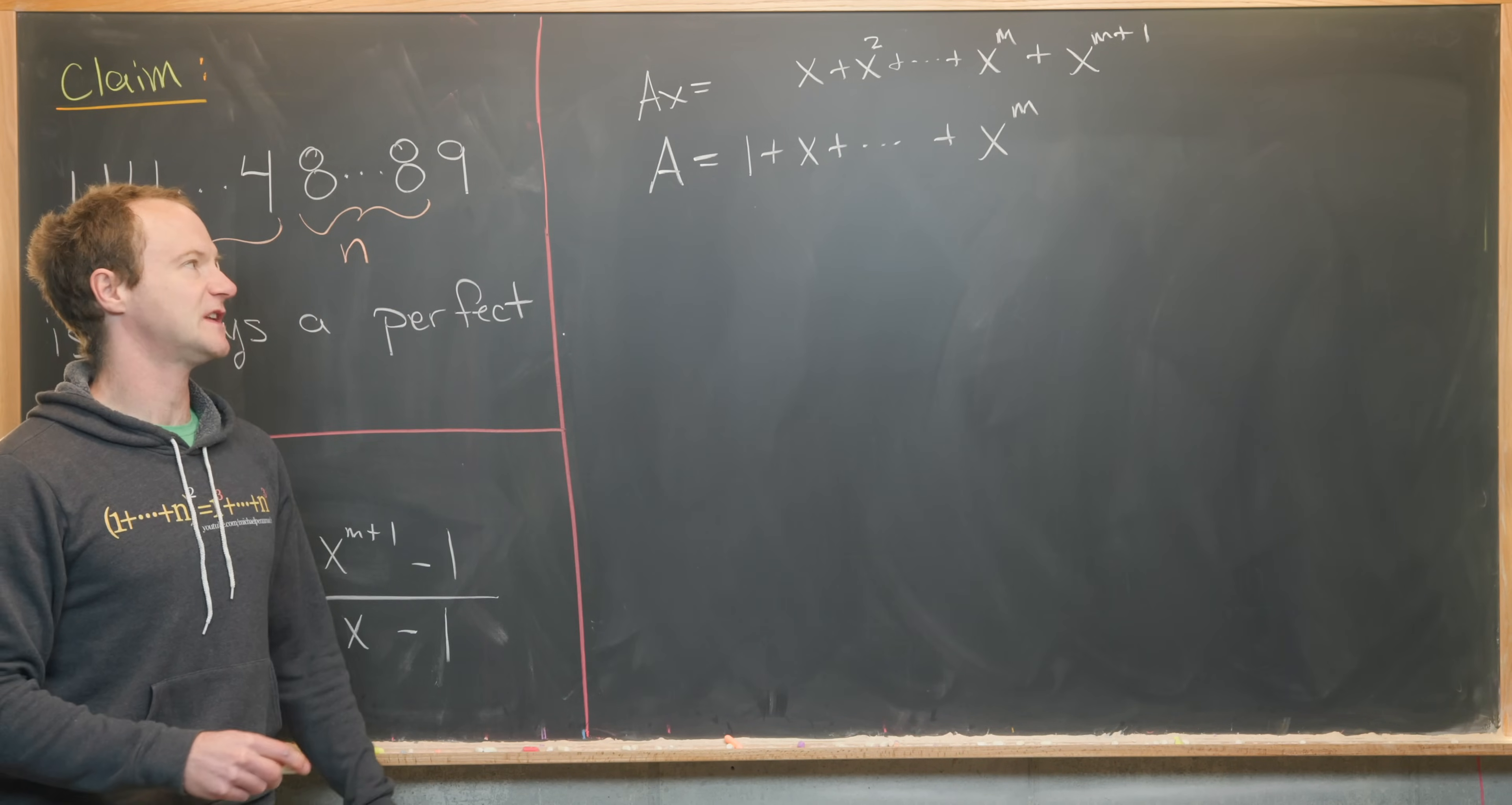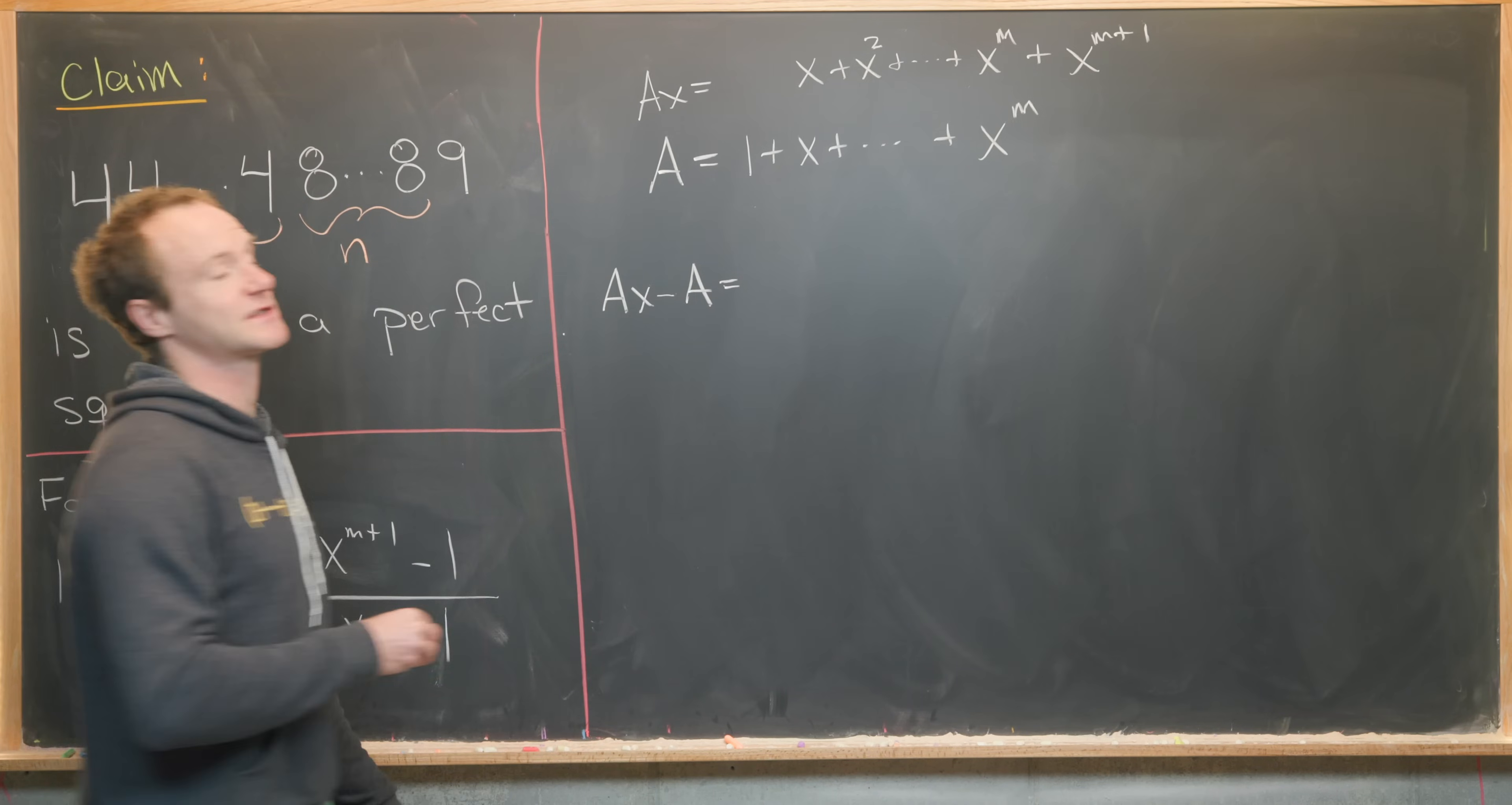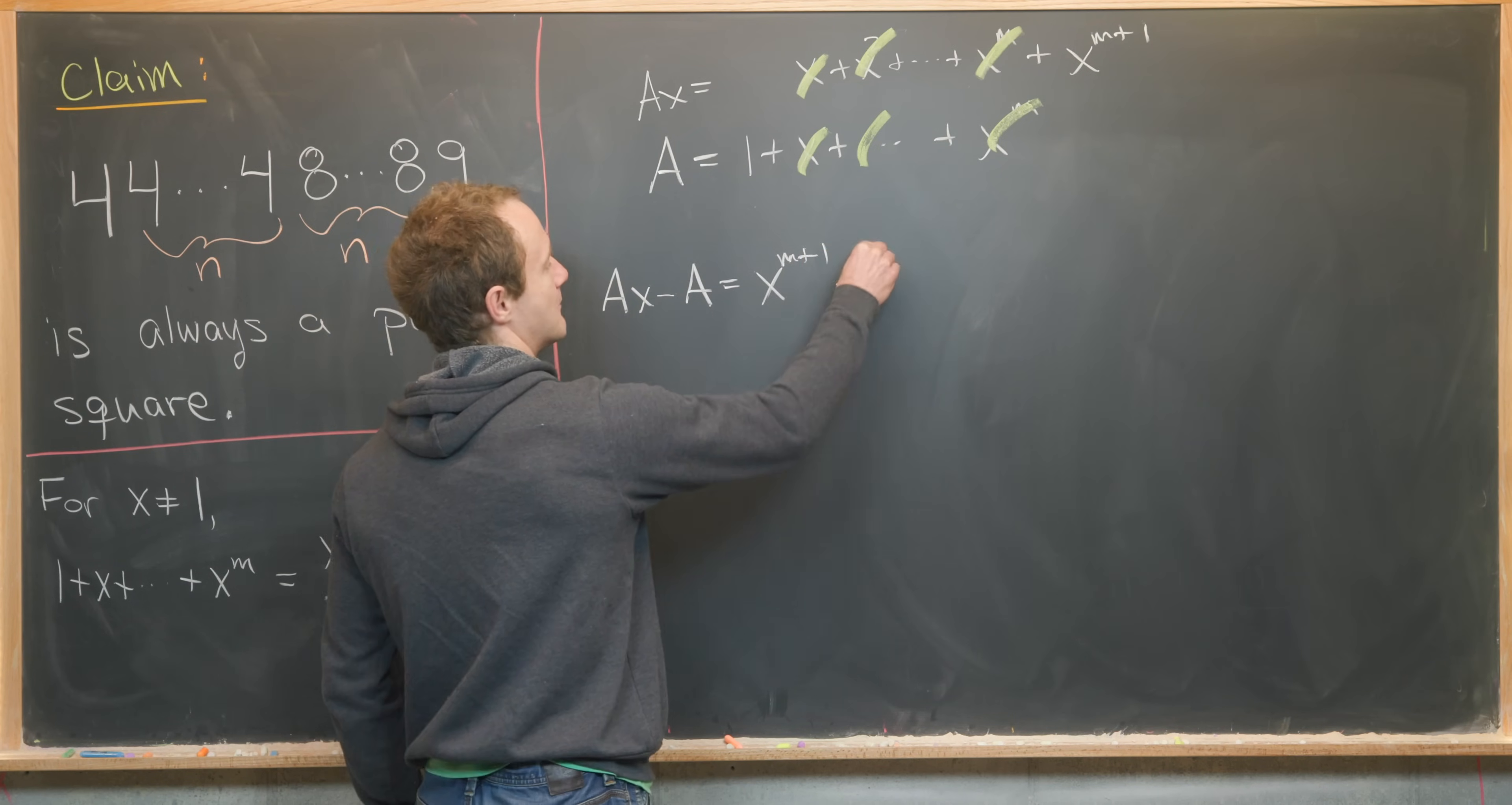So notice this shifting effect was created. Next, we'll subtract Ax minus A on both sides of this equation. So let's see what we get. So we have Ax minus A equals, well, a bunch of stuff cancels while we do this. So notice that this x will cancel this x, this x squared will cancel the x squared, which is next. This x to the m will get canceled by this x to the m. And all we're left with is x to the m plus 1 minus 1.